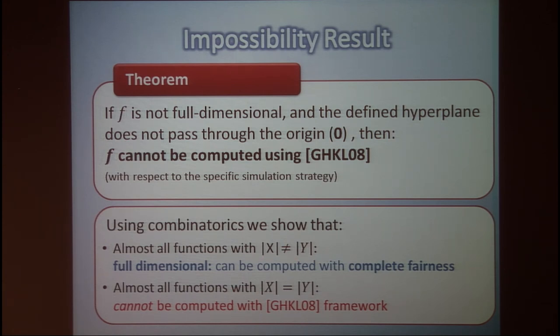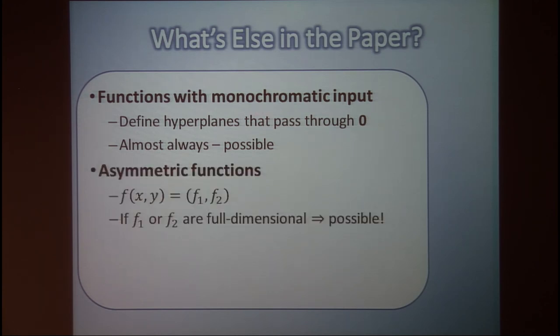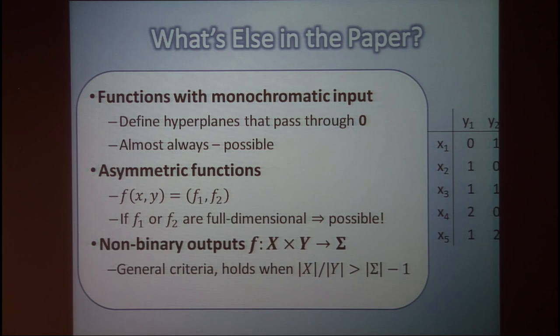Functions where the domain sizes are equal cannot be computed using GHKL, with an exception for monochromatic inputs. We also show results for asymmetric functions where the outputs of the parties are not necessarily the same — giving the first positive results for non-Boolean functions — with the criterion that the ratio of the domains is greater than the alphabet size minus one. Thank you.